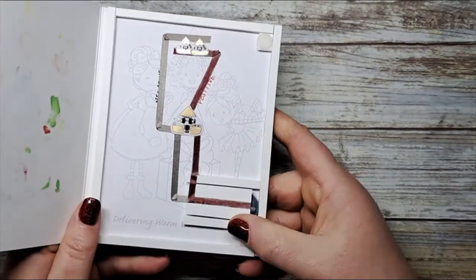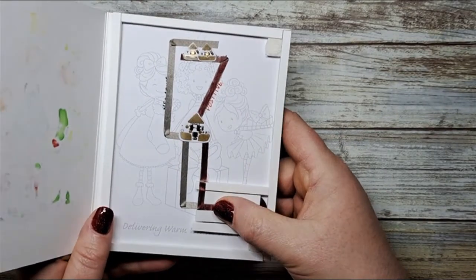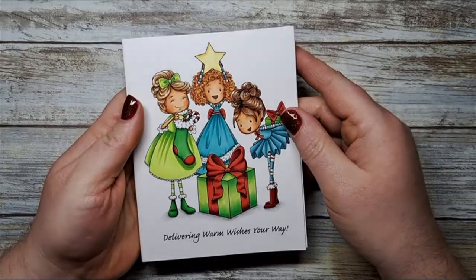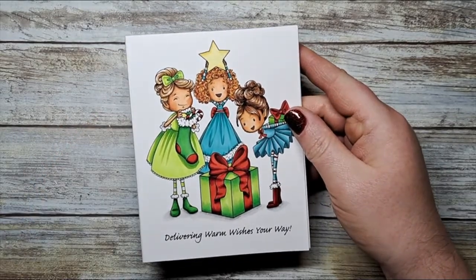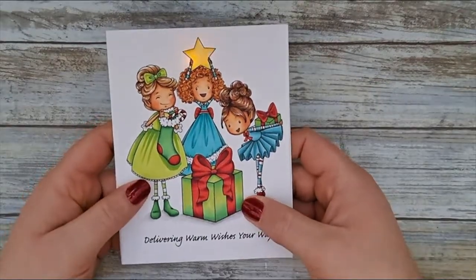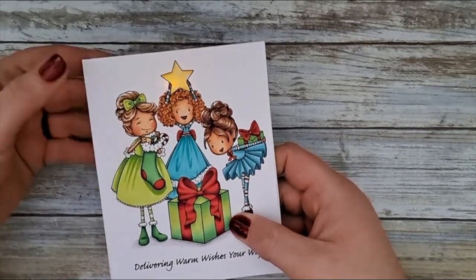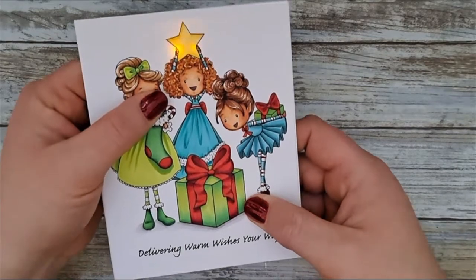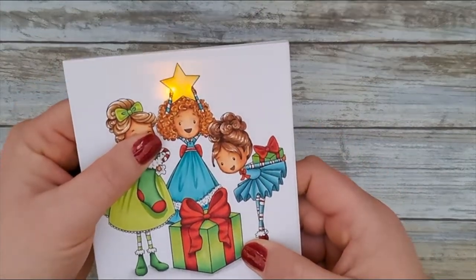Make sure your batteries are in place. And let's check this out. Here's the front of our card. Let's turn out the lights. And there we go. Her cute little star lights up and twinkles.